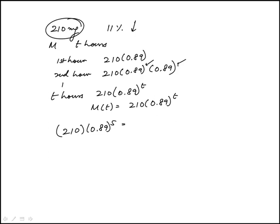So let's do that. 0.89 to the power of 5, that's 0.558. Multiply this by 210, and I get 117. So I would select that for the second blank.